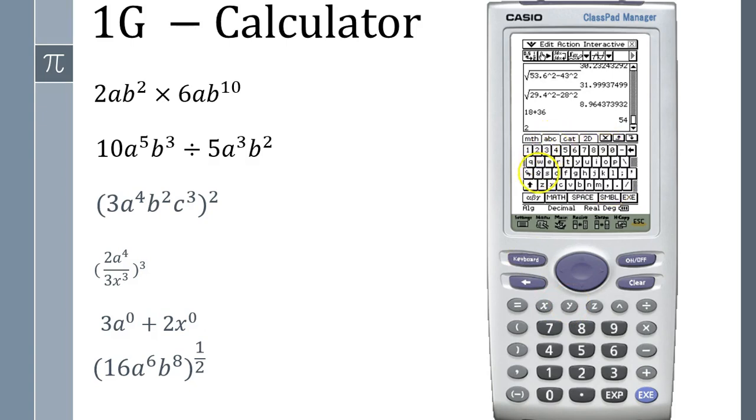Okay, b is squared times 6ab to the power of 10. So we've got 12ab to the power of 12. That's quite simple. Let's try the next one: 10a to the power of 5, this will be easier on your calculator because the buttons are a bit bigger, b to the power of 3 divided by 5.